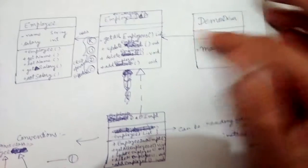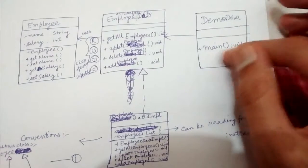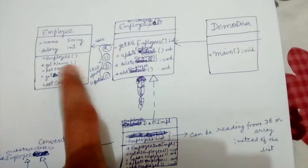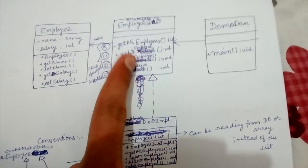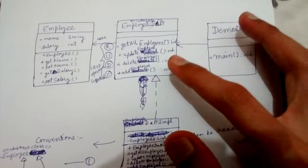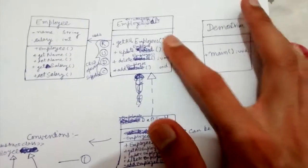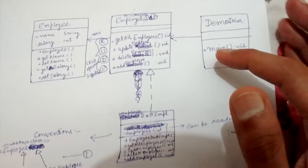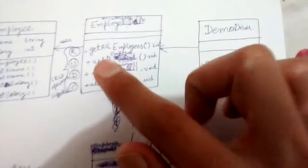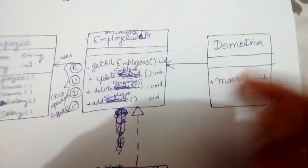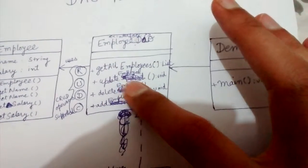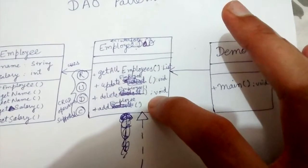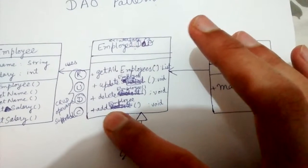The client class has a main method which is actually trying to access the data. So instead of directly dealing with the Employee class, it's dealing with this EmployeeDAO. The EmployeeDAO is the access point for any kind of data it requires. If the client wants to update an employee's information, it will just call the updateEmployee method on this EmployeeDAO. It wants to delete an employee, so it just calls deleteEmployee.